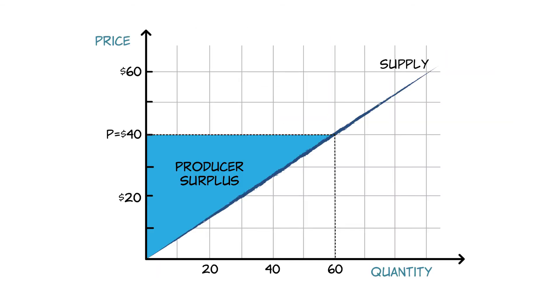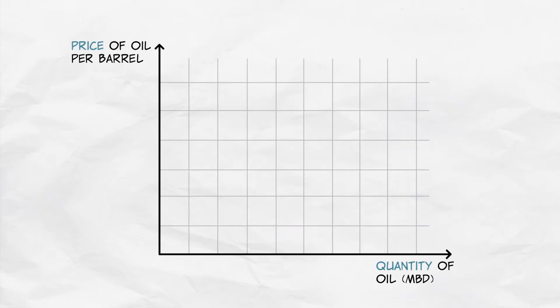What this means graphically is that total producer surplus is measured by the area above the supply curve and below the price. To see this, let's look at the market for oil. Here's our supply curve.